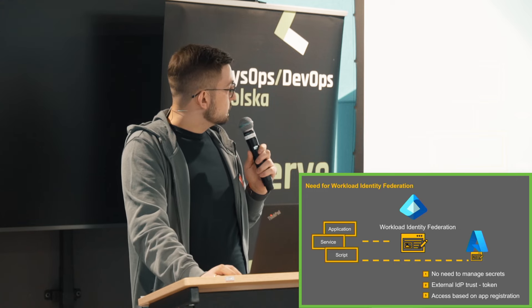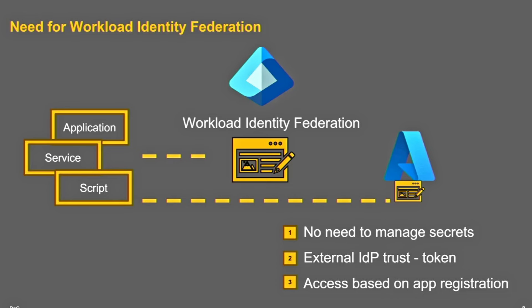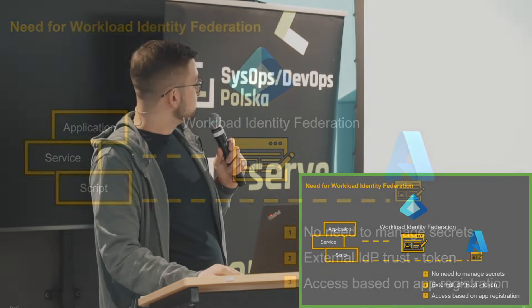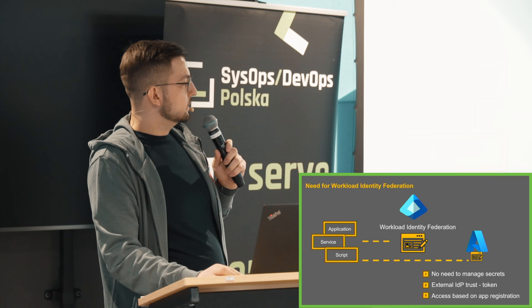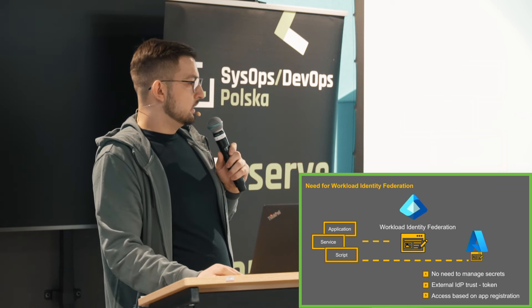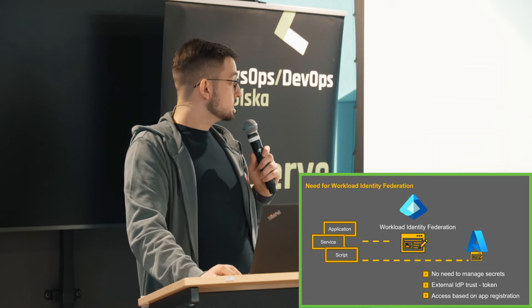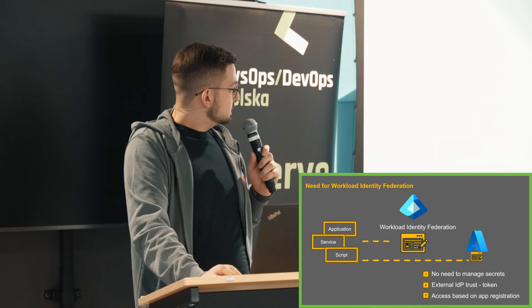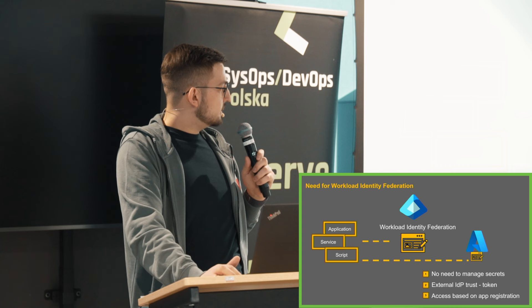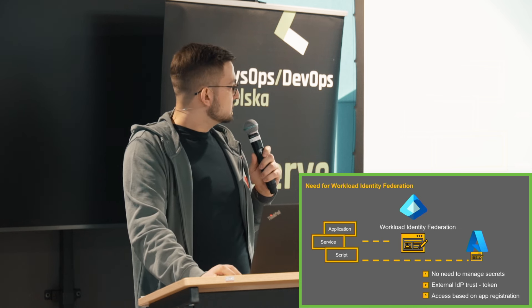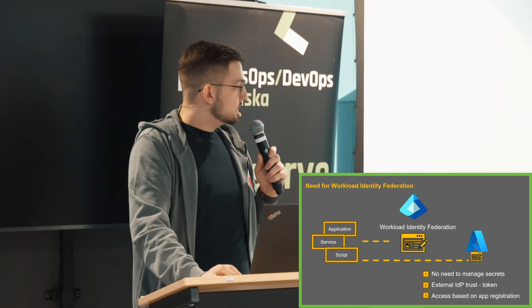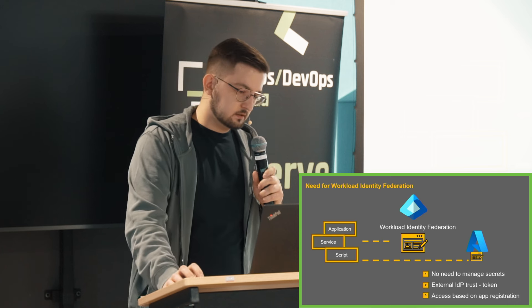Workload Identity rozwiązuje ten problem w taki sposób, że rezygnujemy zupełnie z używania haseł czy certyfikatów, natomiast skupiamy się na OpenID Connect — czyli wymieniamy się tokenami. Microsoft w lutym wprowadził do General Availability takie rozwiązanie, dzięki któremu możemy autoryzować się chociażby do Azure DevOps za pomocą Federated Identity Credentials. Daje nam to bonusy w postaci braku haseł, eliminuje potrzebę zarządzania nimi i szybkiego zestawiania połączeń z zewnętrznymi providerami.